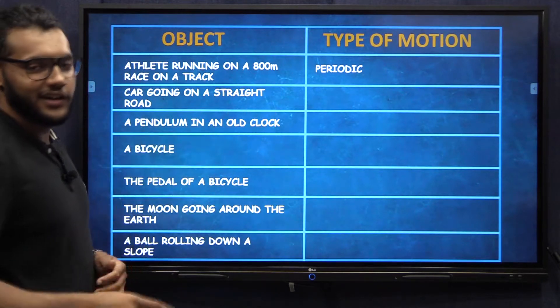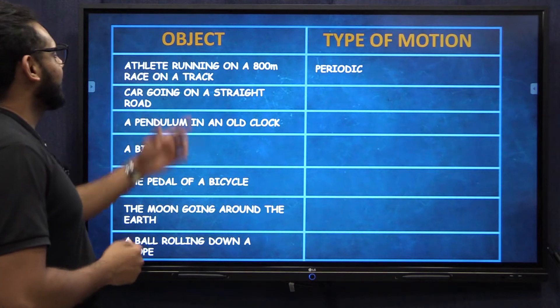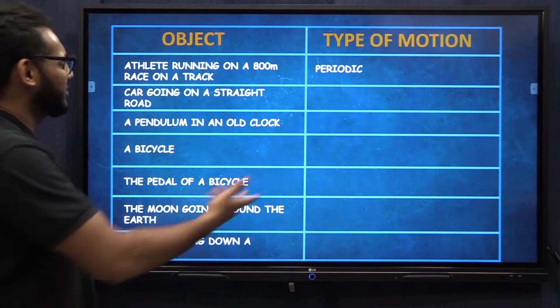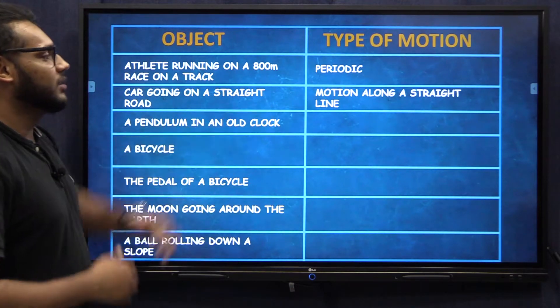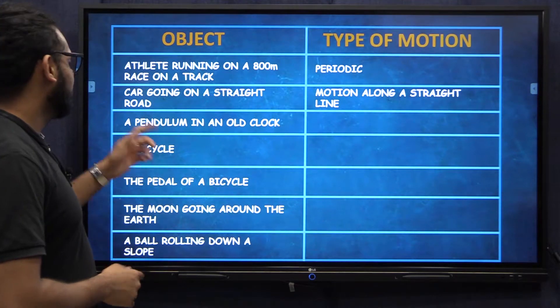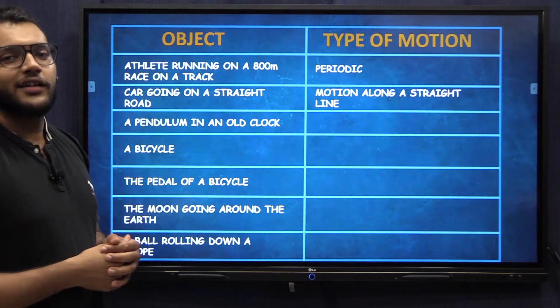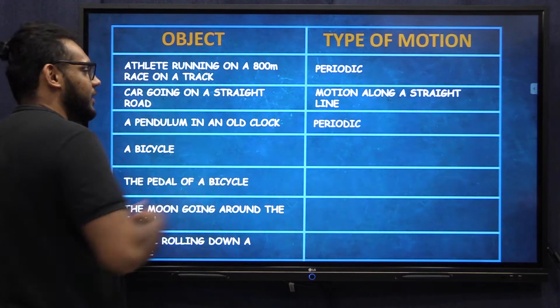For those of you who said periodic, you're spot on. Now a car going in a straight road, it's quite obvious. It's motion along a straight line. Now a pendulum in an old clock, I did mention it earlier, it is periodic.